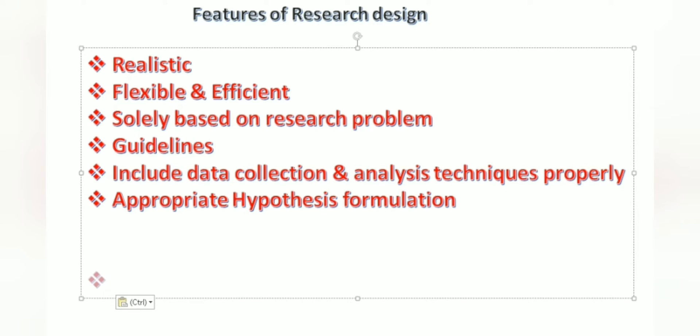For example, if you would like to do certain changes in your sample size, hypothesis, or any part of your research, it should be changeable easily. It's solely based on research problem. Based on those objectives, the researcher should know what type of research design to apply, what kind of methods, what statistical tests will be there. The research design will be framed based on the research objectives.